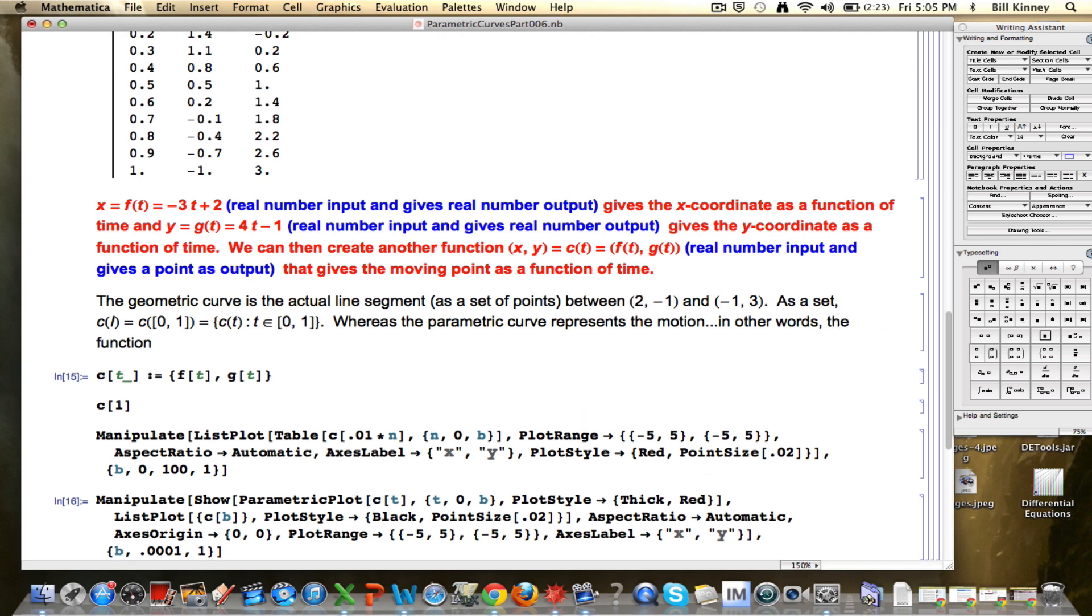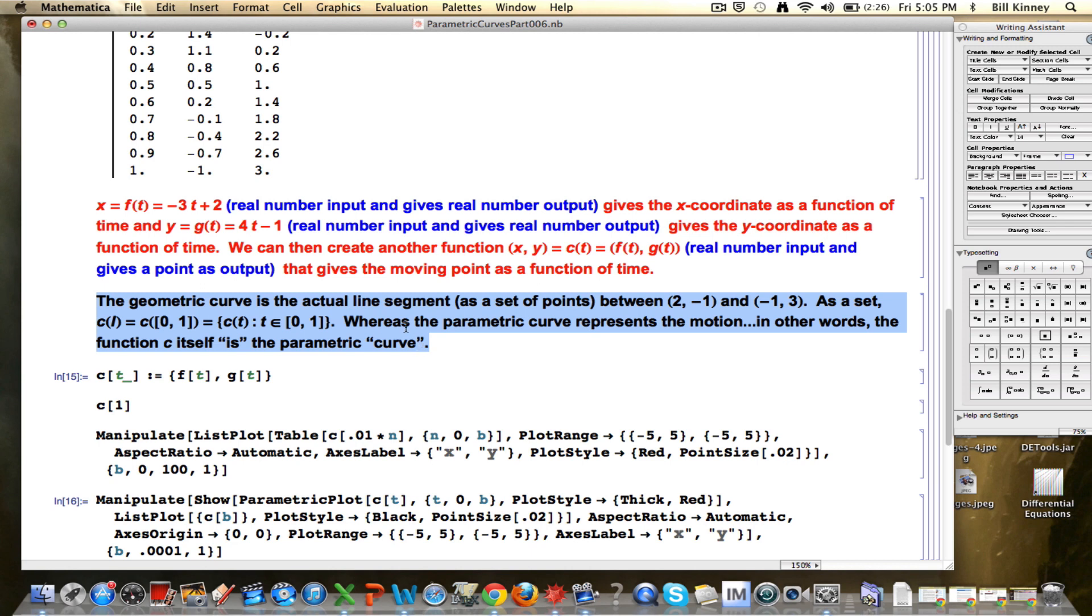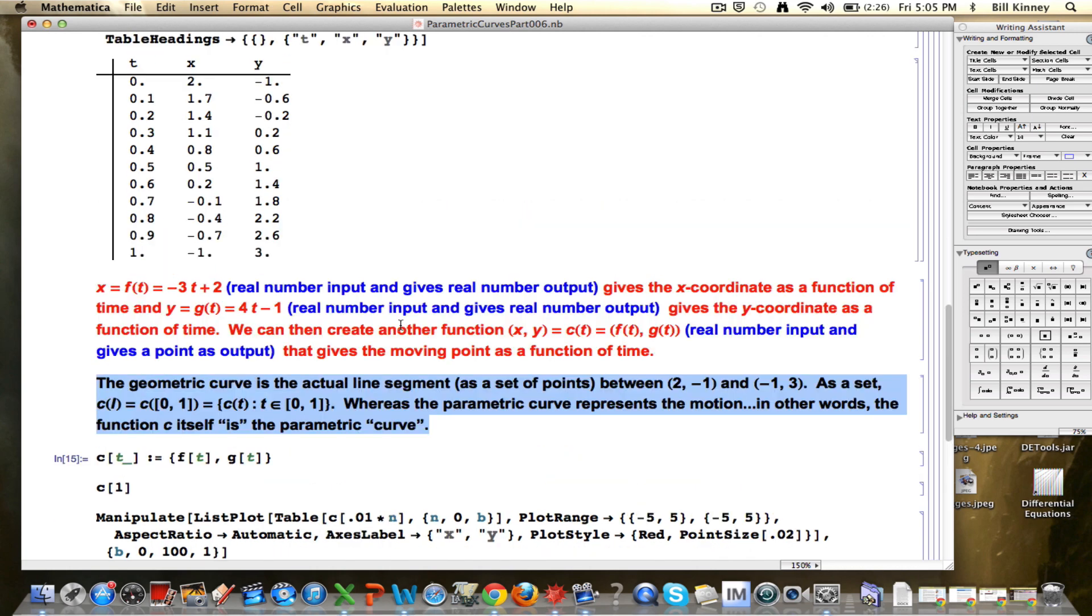In other words, the function c itself is the parametric curve. I'm putting 'is' and 'curve' in quotes because we don't normally think of functions as being curves. What I am saying here, and this is a common thing to do, is that the parametric curve is really the function, because the function captures both the direction and speed information. It is what's really modeling the motion. That's a subtlety that's confusing, but I would encourage you to think about it a little bit. That is the distinction that I wanted to highlight here.